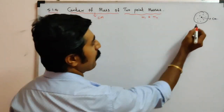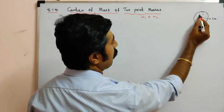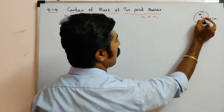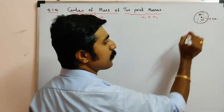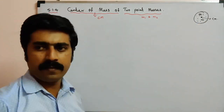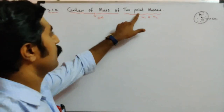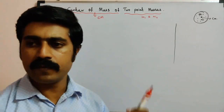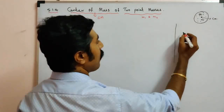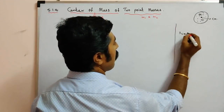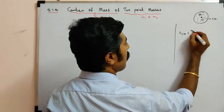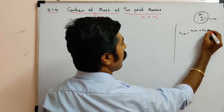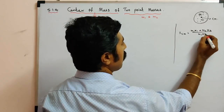If you choose two masses, one is M1 and another is M2, then in between these two point masses, the center of mass is there. We want to calculate the center of mass of two point masses. With the help of the equation, the formula along the x-axis is: XCM equals M1 times x1 plus M2 times x2, divided by M1 plus M2.